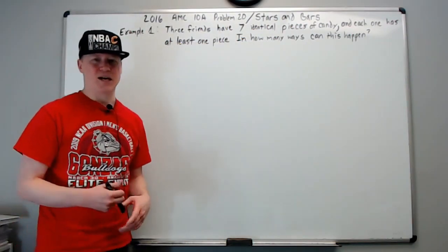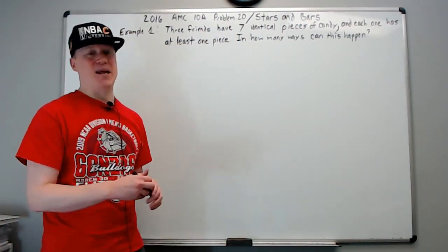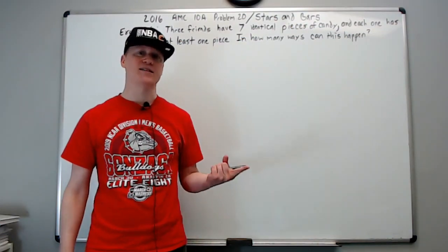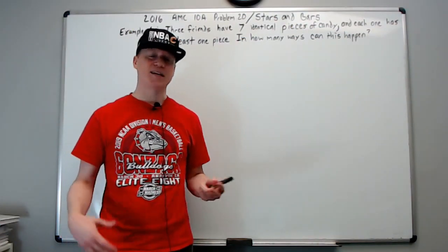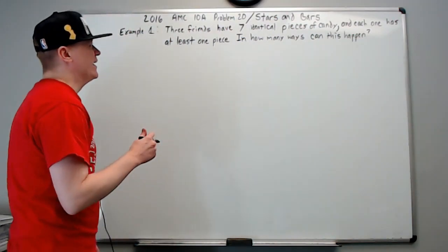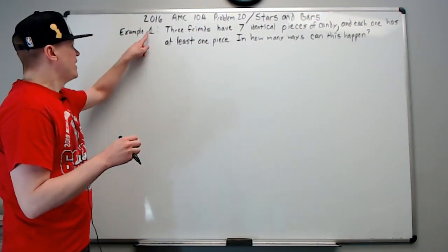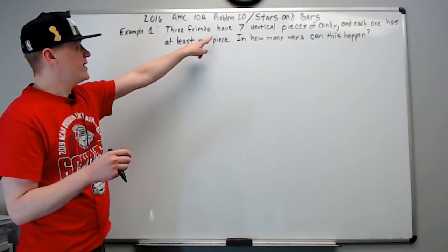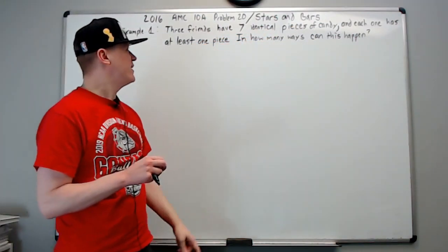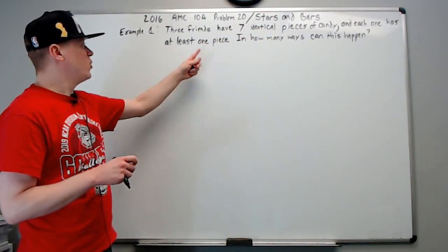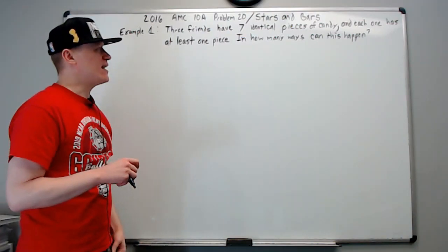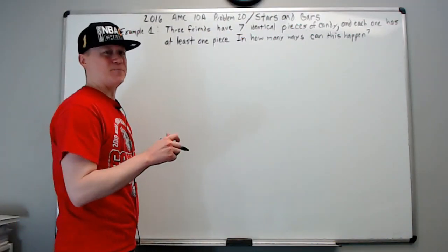What is stars and bars? It has different names — I've heard it called rice and chopsticks, sticks and stones. Here's an example of how it works: three friends have seven identical pieces of candy, and each one has at least one piece. In how many ways can this happen?